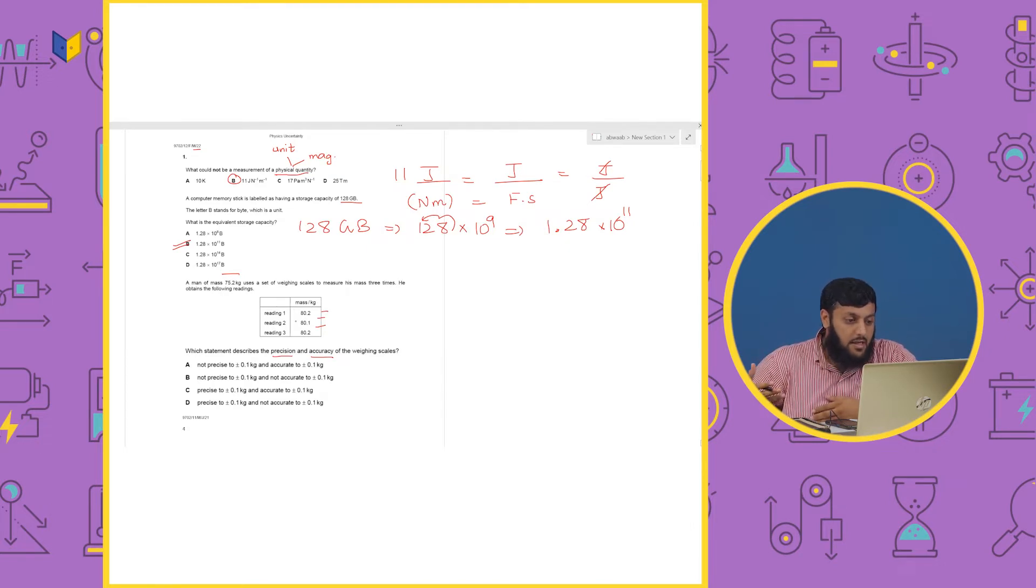But, what should we do with accurate? So, we can select the option A and B both of these two. Because it is starting with the not precise. So, these are precise actually. So, now, out of C and D.